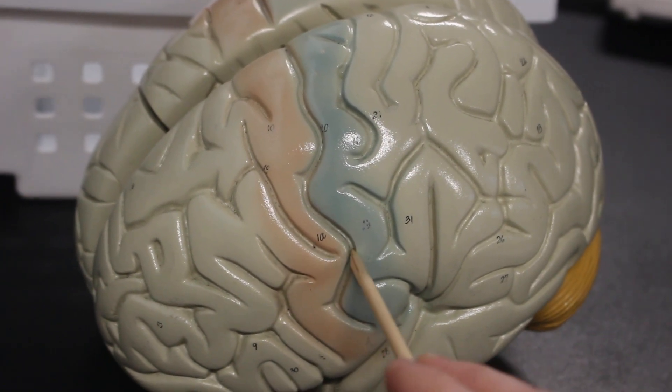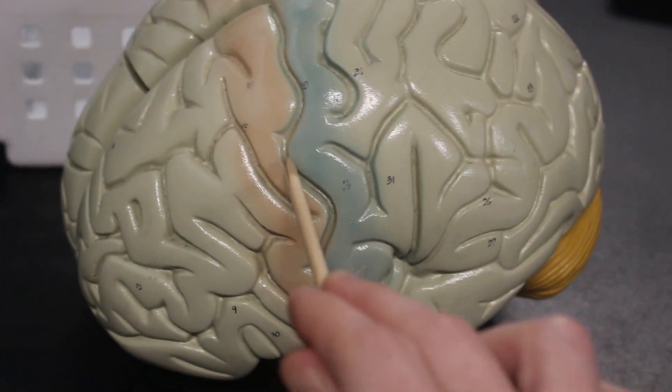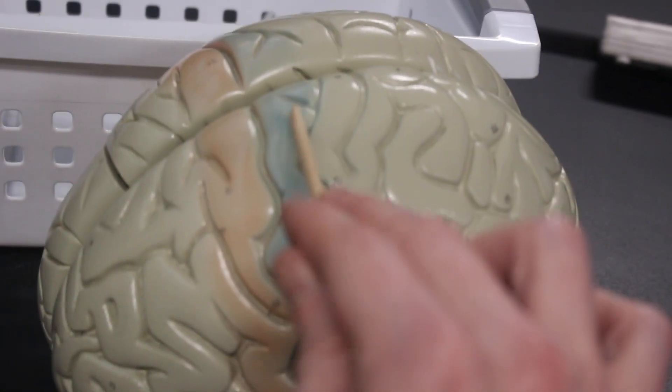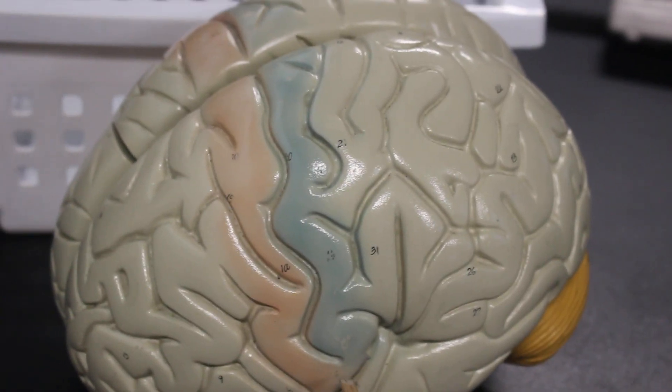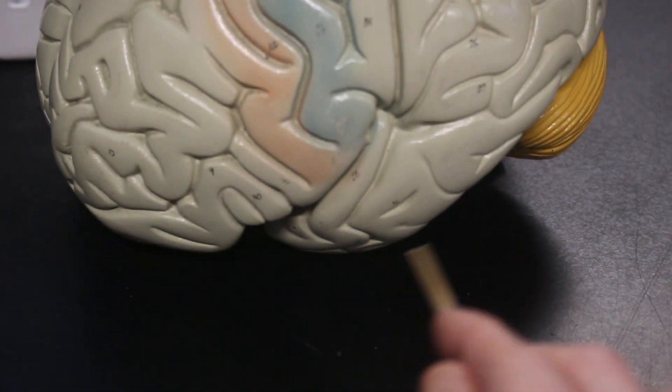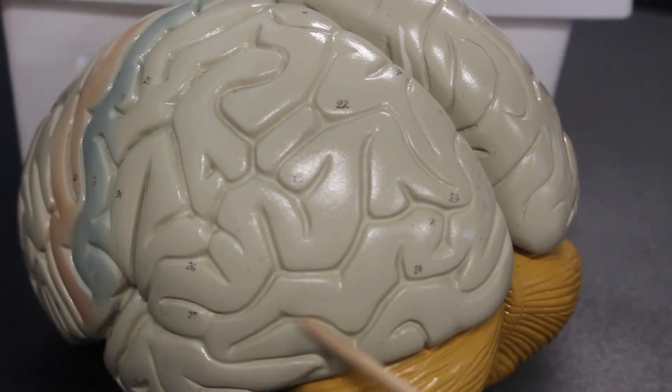Central sulcus is the border between the frontal lobe and parietal lobe. Central sulcus also has the precentral gyrus here and the postcentral gyrus here. Here we got the lobes: frontal lobe, parietal lobe, temporal lobe, and the back is the occipital lobe.